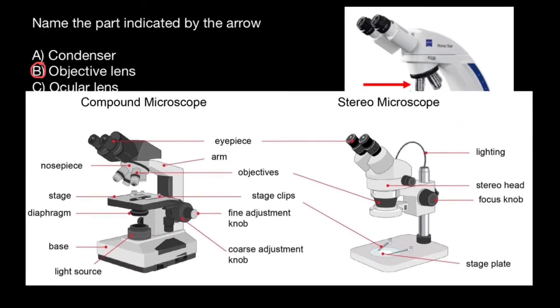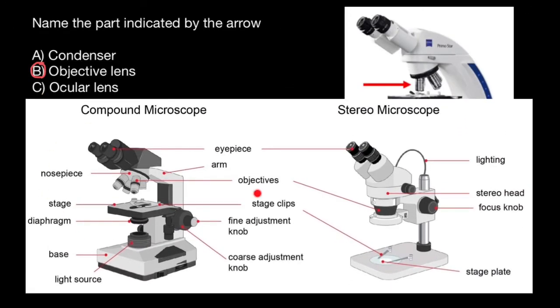Now I want you to take a look at this picture. So what we can see here: this is a compound microscope and this is a dissecting microscope. What's the difference?